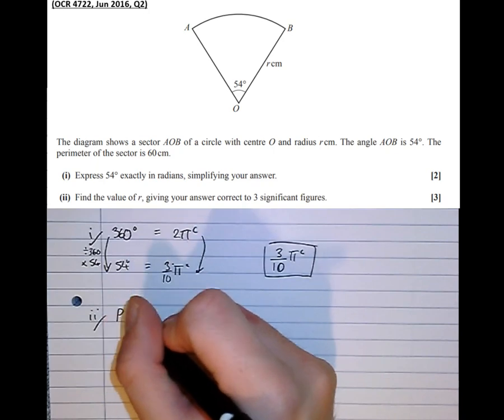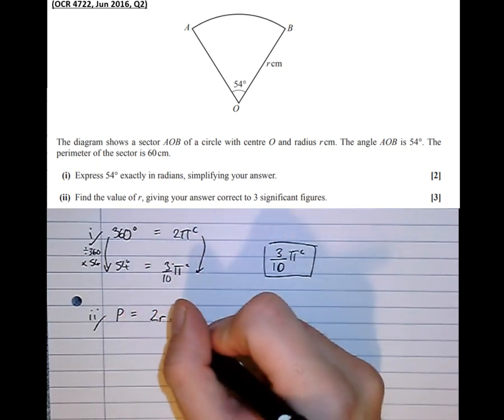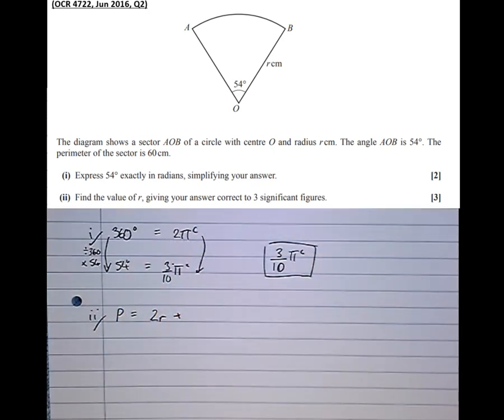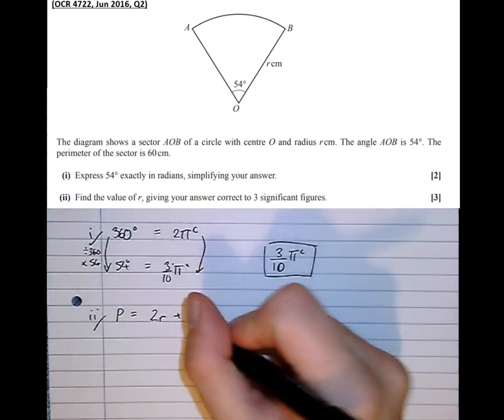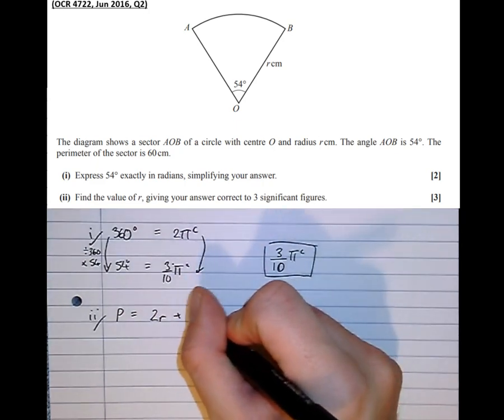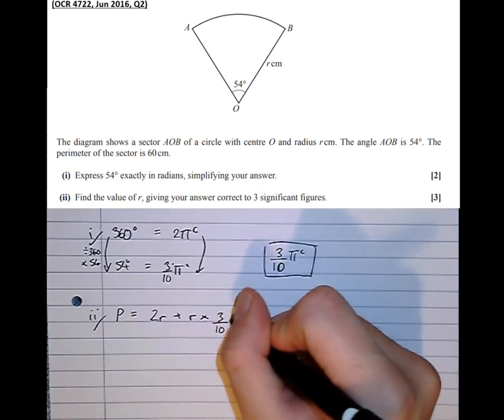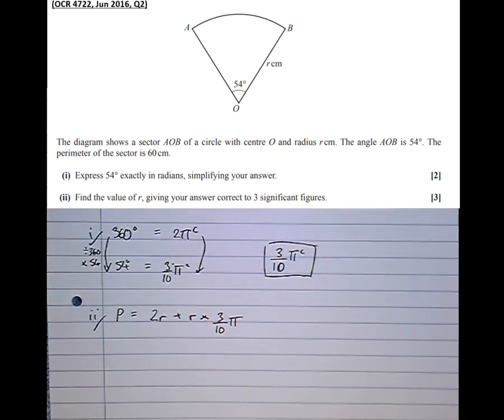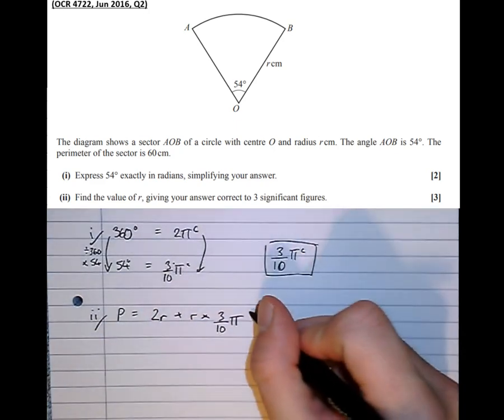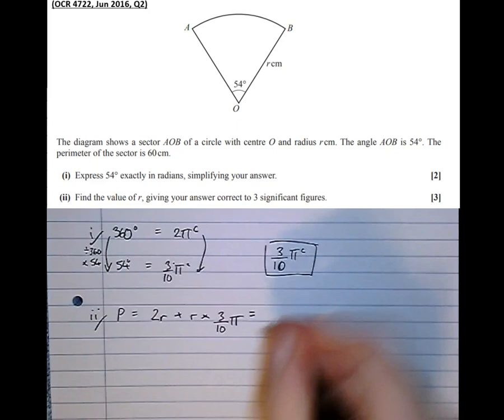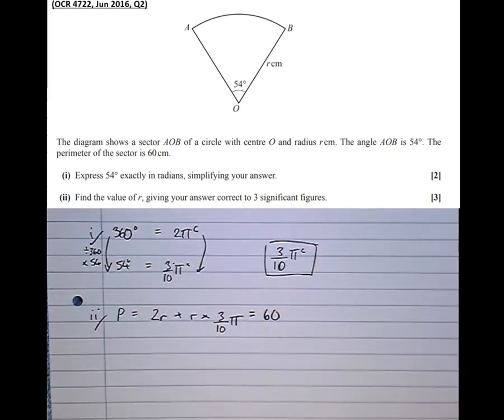So perimeter equals the 2 radii, plus the curved part, the arc length, which is R times θ, which is R times, and we worked that out to be 3 tenths π. We know also from the question that it's 60.